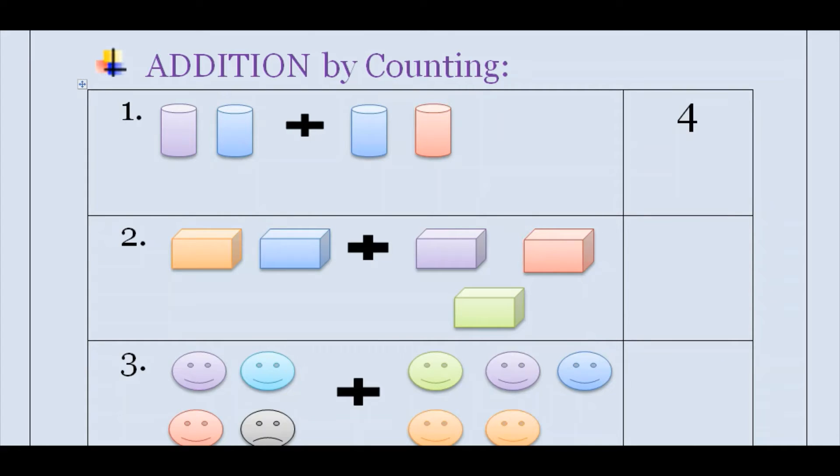Let's see our second question. Here you can see bricks. You have to count these bricks and add them, then write here. So let's count and add them: 1, 2, and here given 1, 2, 3. Now you have to add all of them: 1, 2, 3, 4, 5. It means 5 bricks are there.